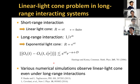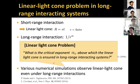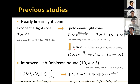So I go to the linear light cone problem in long-range interacting systems. In the case of short-range interacting systems, it is very natural to expect that the speed of information propagation is finite and the effective light cone is linear with respect to time. But in the case of long-range interacting Hamiltonians, information immediately propagates to arbitrary distances. So it is very non-trivial whether such a linear light cone can be obtained. The first rigorous results on the effective light cone in long-range interacting systems were given by Hastings and Koma in 2006.